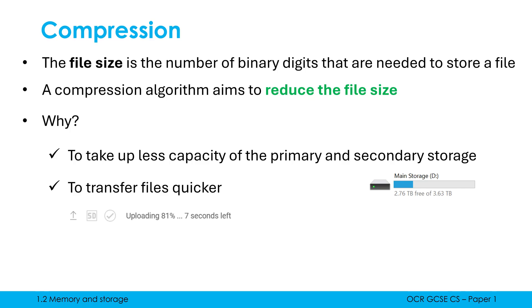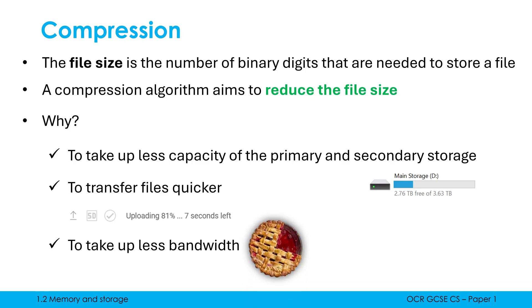Another benefit is we can transfer files quicker over a network — both uploading and downloading. If we have lots of images on our webpages, it will take longer for users to download. YouTube will have compressed the video you're watching right now so that it arrives at your computer faster, because it has less binary data to transfer. Linked to this, but a separate point, is that a smaller file size takes up less bandwidth compared to the bigger version. Bandwidth is something which has to be shared out.